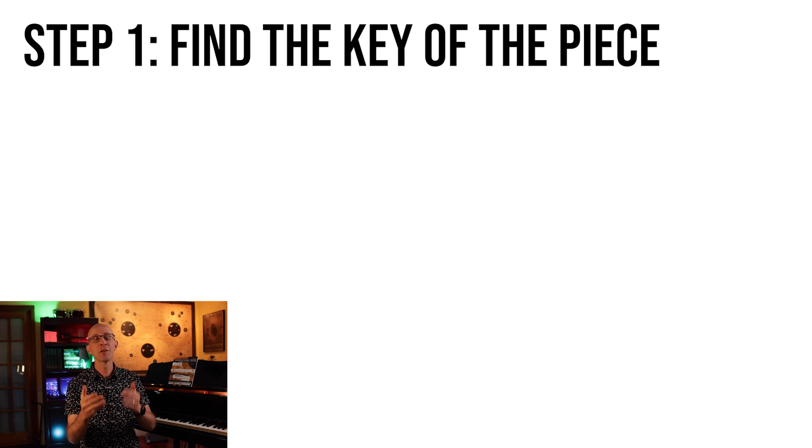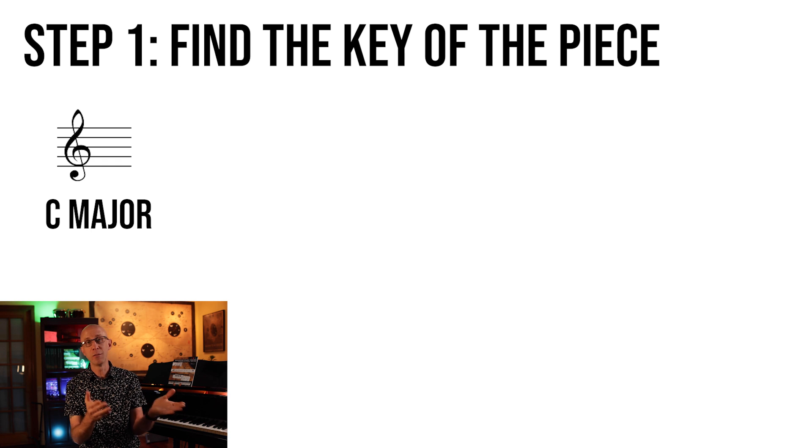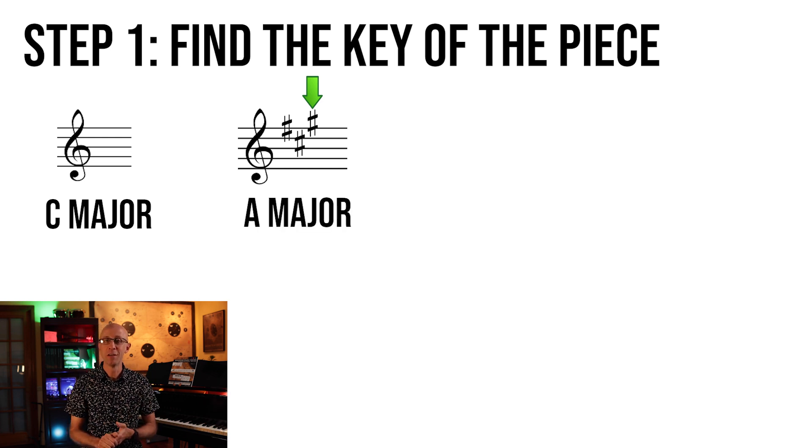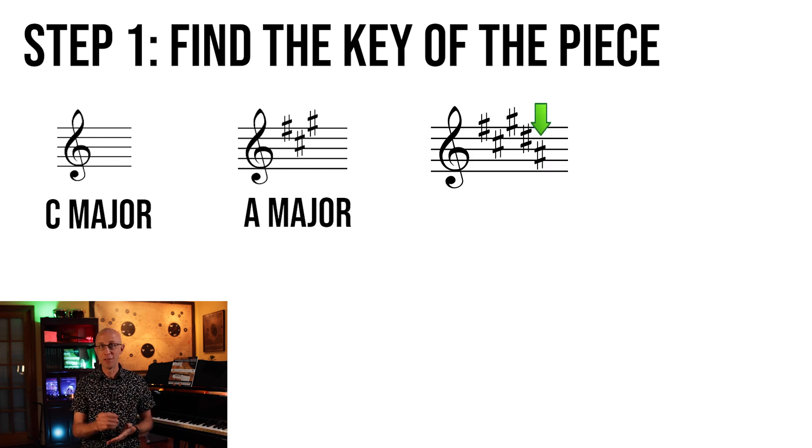To do that, we just need to look at the key signature. If it has no accidentals, you're in the key of C major. If the key signature has sharps, then the key is a note a half step above the last sharp. So here, the last sharp is a G sharp, and a half step above G sharp is A. So this piece is in the key of A major. Basically, the last sharp is the leading tone of the key.